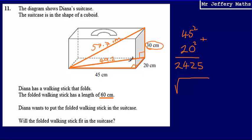So what I can say is that the length of this diagonal is going to be 57.7 centimeters. So if we now come back to our original question, will the folded walking stick fit in the suitcase? And our answer to that is going to be no. And the reason for that is because the folded walking stick is 60 and the length of the diagonal in that suitcase is only 57.7. So no, and then we just say that the length of the diagonal is 57.7 and we would write that down.